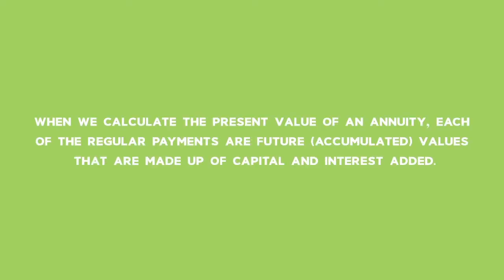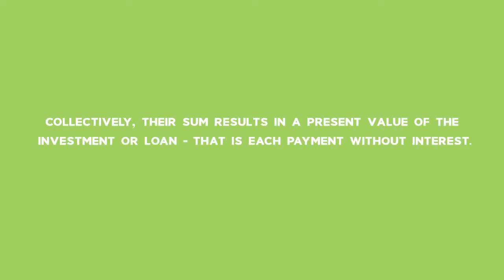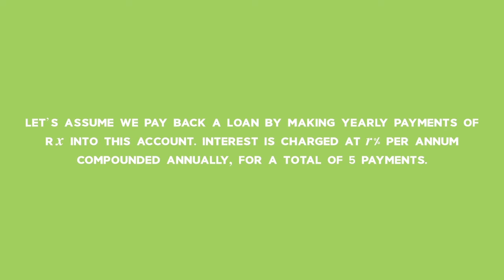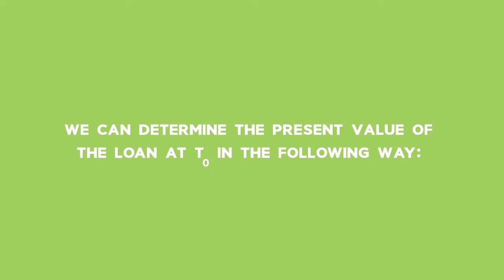When we calculate the present value of an annuity, each of the regular payments are future or accumulated values made up of capital and interest. These future values become a sequence of present values when moved backwards on the timeline, removing interest from each period. Collectively, their sum results in the present value of the investment or loan. Let's assume we repay a loan with yearly payments of X rand, at R% per annum compounded annually, for 5 payments — an ordinary annuity.